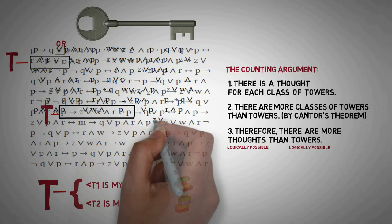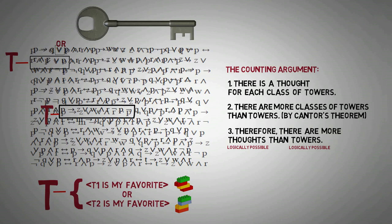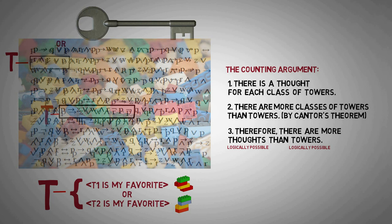In other words, there are more potential conceptual configurations, configurations of thoughts about LEGO towers, than potential LEGO configurations. This all follows from Cantor's theorem upon reflection on the ways that we can build thoughts from more basic concepts of LEGOs.